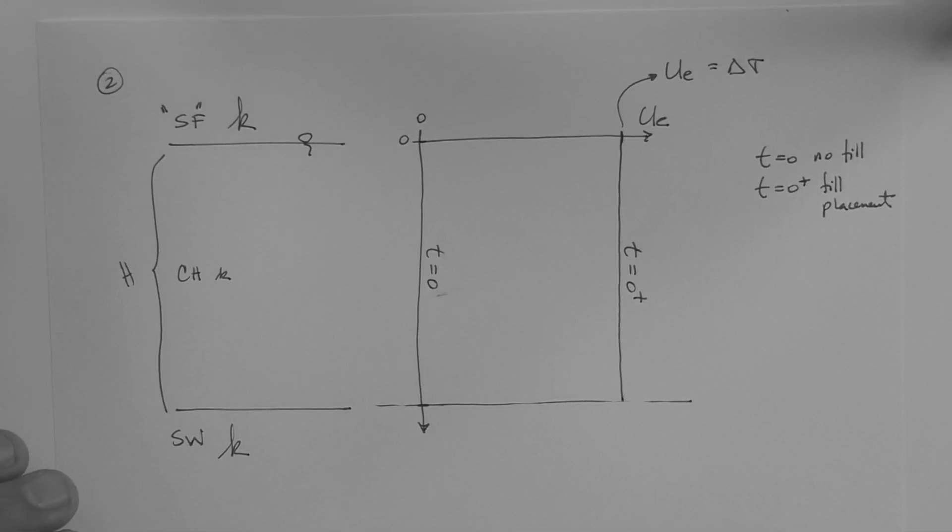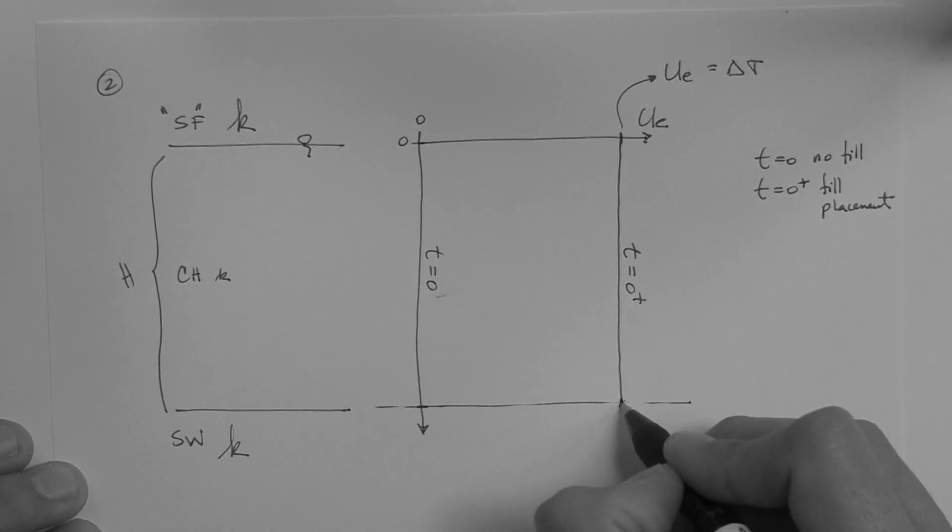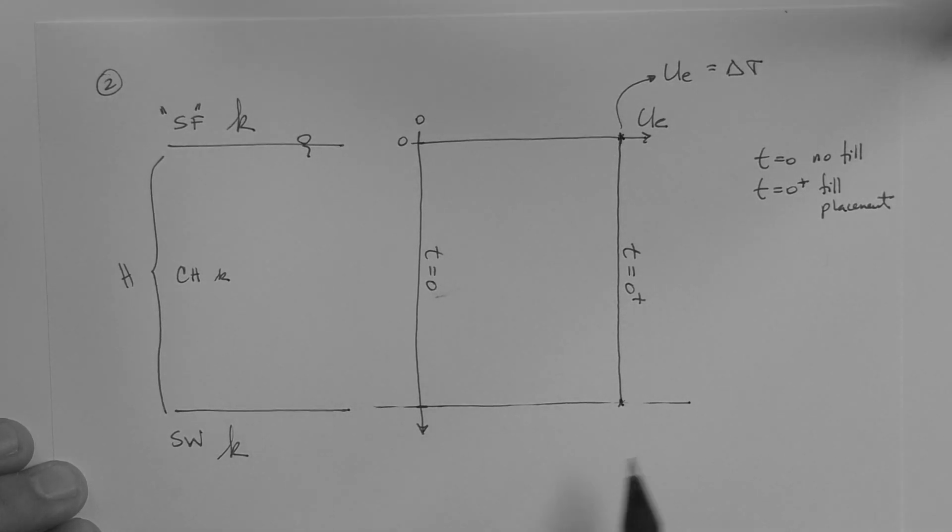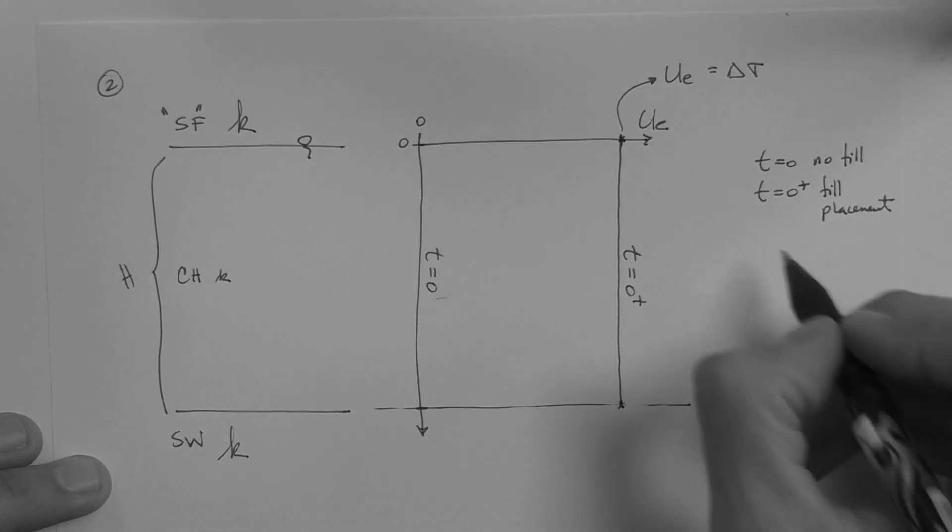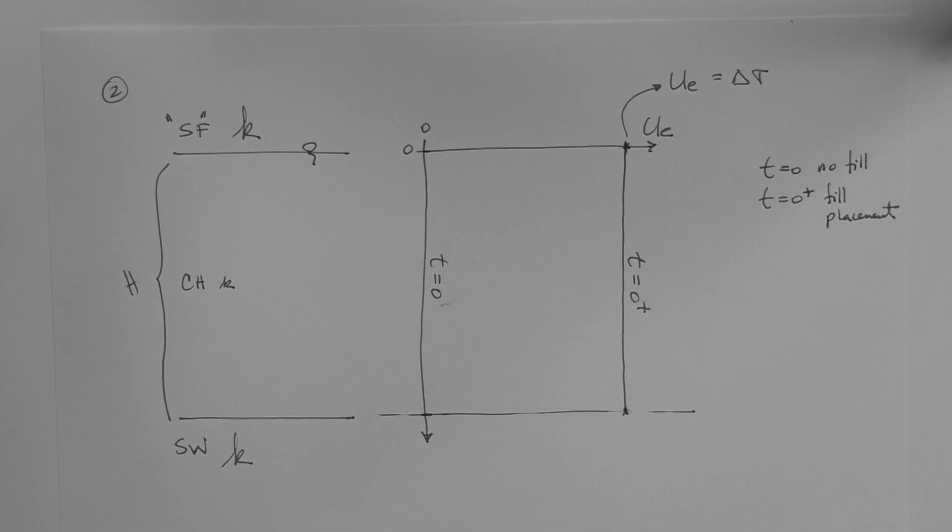And this value is equal to the load. Now, that is true for every point, as you can see here, except really the two points that correspond to the two drainage boundaries. At those two points, the excess pore pressure is always zero. What happens, for example, at time equals ten days? That is ten days after fill placement. Ten being an example.